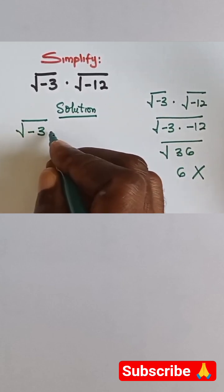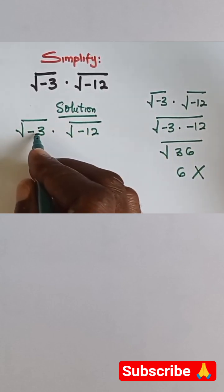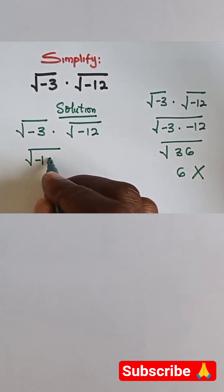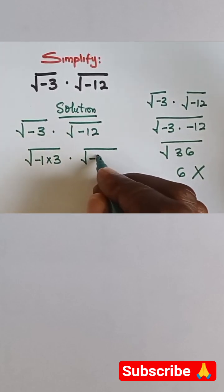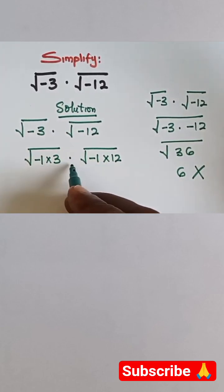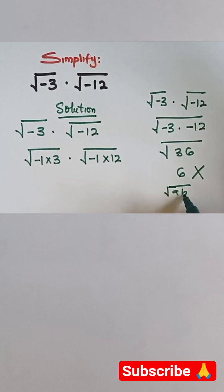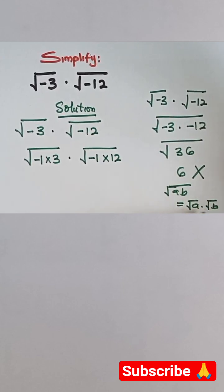We have √-3 multiplied by √-12. We can write this as √(-1 × 3) and also as √(-1 × 12). Now we can give them separate square roots because the law is if we have √AB, it becomes √A multiplied by √B.